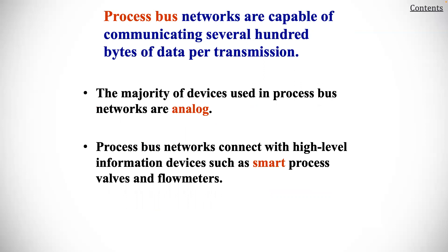Process bus networks are capable of communicating several hundred bytes of data per transmission. The majority of devices used in process bus networks are analog. Process bus networks connect with high-level information devices such as smart processes, valves, and flow meters.